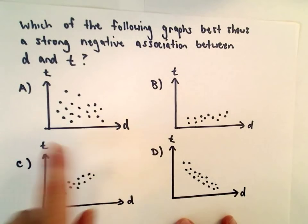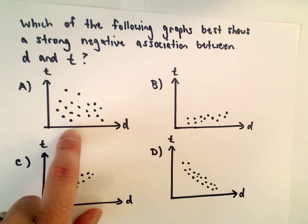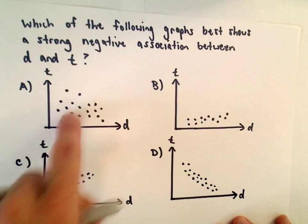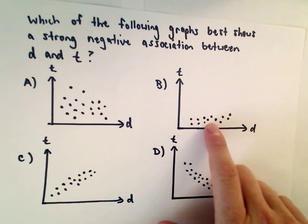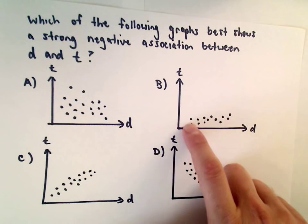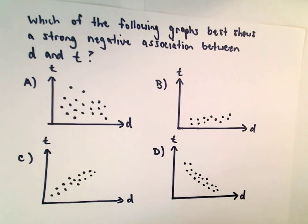Answer choice A - they're all kind of spread out. There's not really any sort of strong association at all between the dots. Everything's kind of all over the place. Answer choice B has a positive association, but the dots are slowly trending upwards. Same thing with answer choice C.